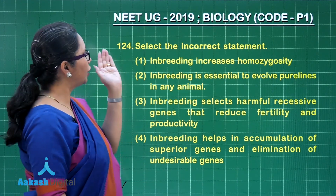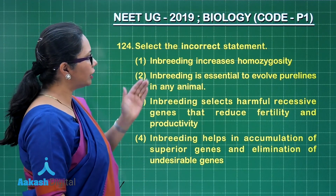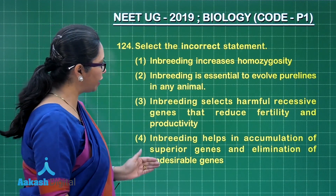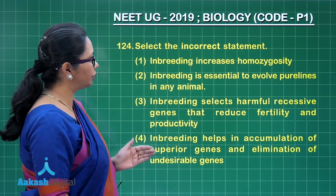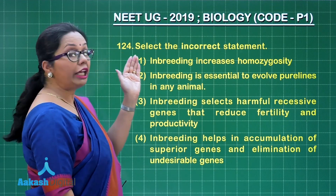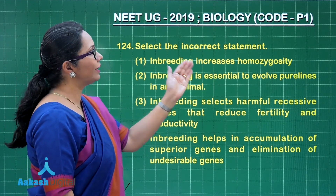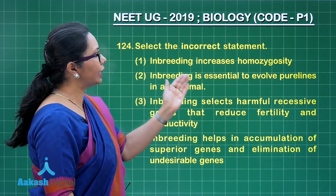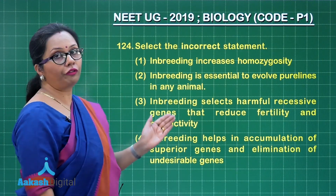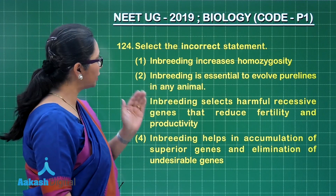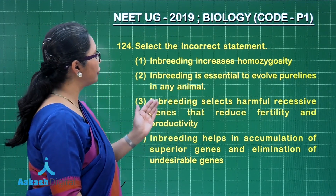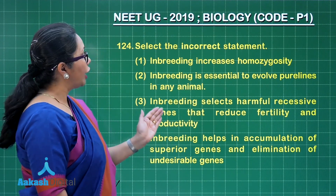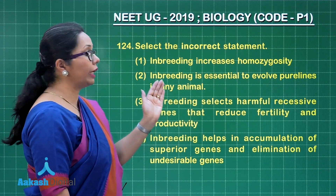Question 124: select the incorrect statement. We have four statements here from animal husbandry regarding inbreeding. Inbreeding increases homozygosity — this is correct. Inbreeding is essential to evolve pure lines of any animal — this is also correct. Inbreeding selects harmful recessive genes that reduce fertility and productivity — now the purpose of inbreeding is to